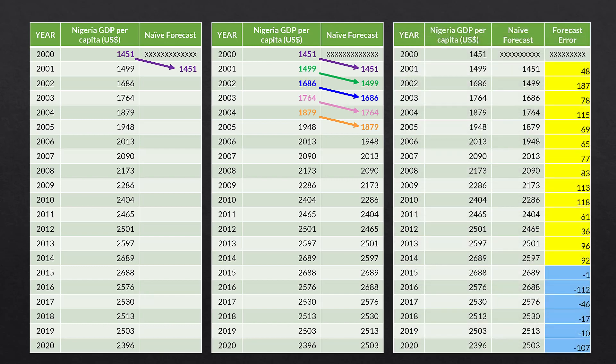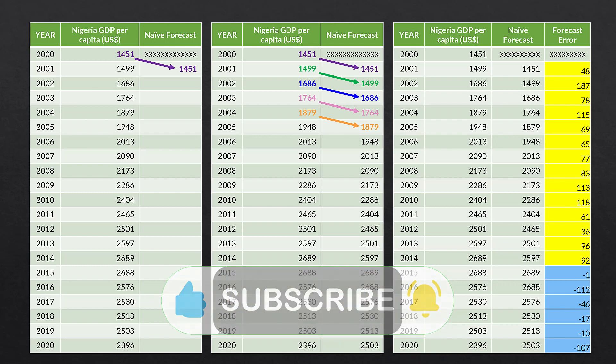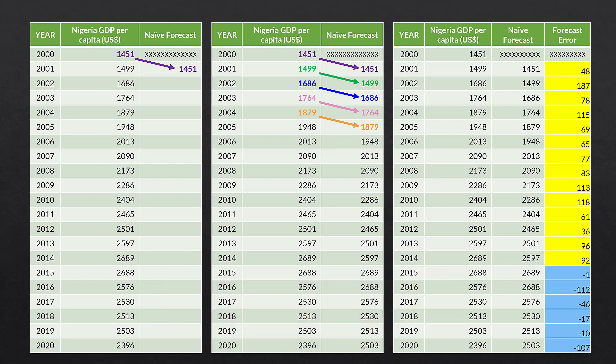Then we calculate the forecast error, which is in the right-hand column — that is just the actual minus the forecast. In 2001, for example, the forecast error is 1,499 minus 1,451, for a forecast error of 48, which is positive. At the bottom we have negative forecast errors because the forecast value is larger. In 2017, we have 2,530 minus 2,576, and therefore the forecast error is negative.